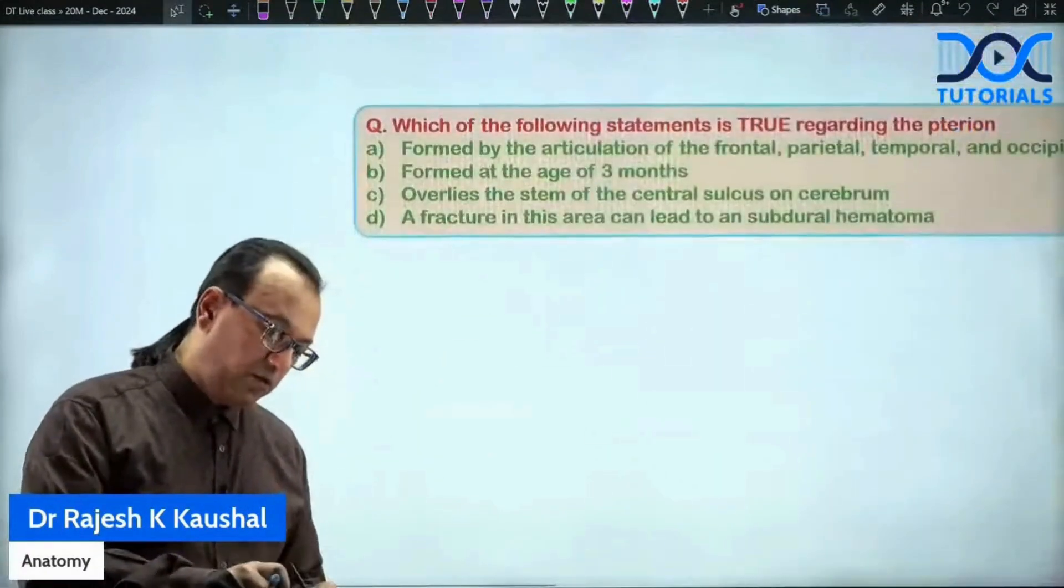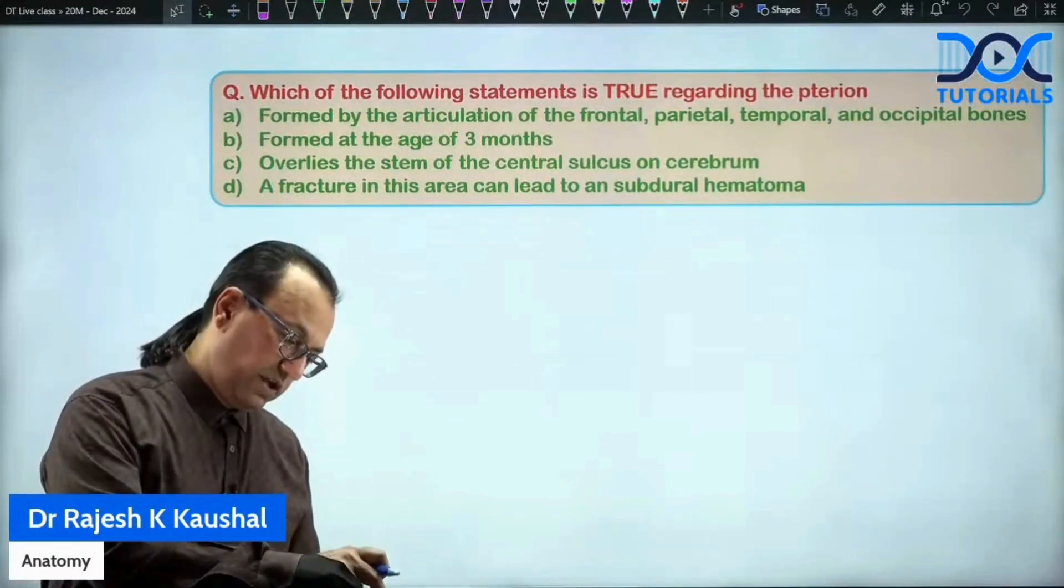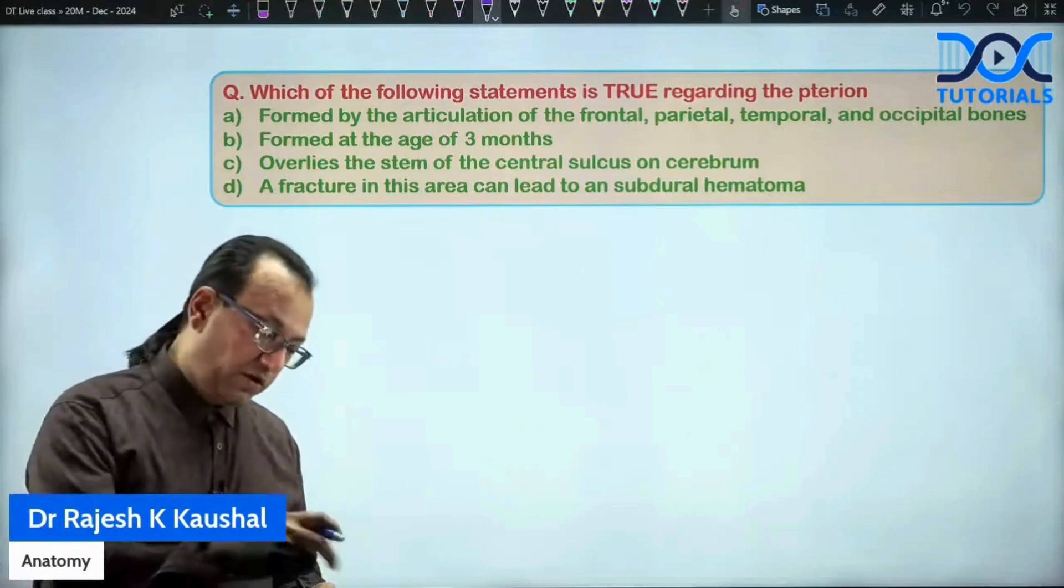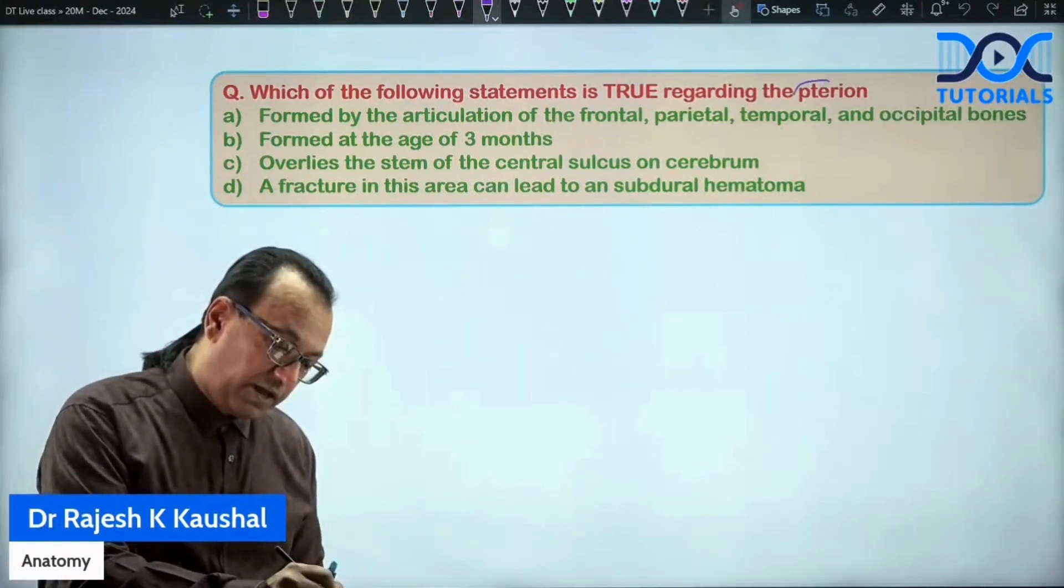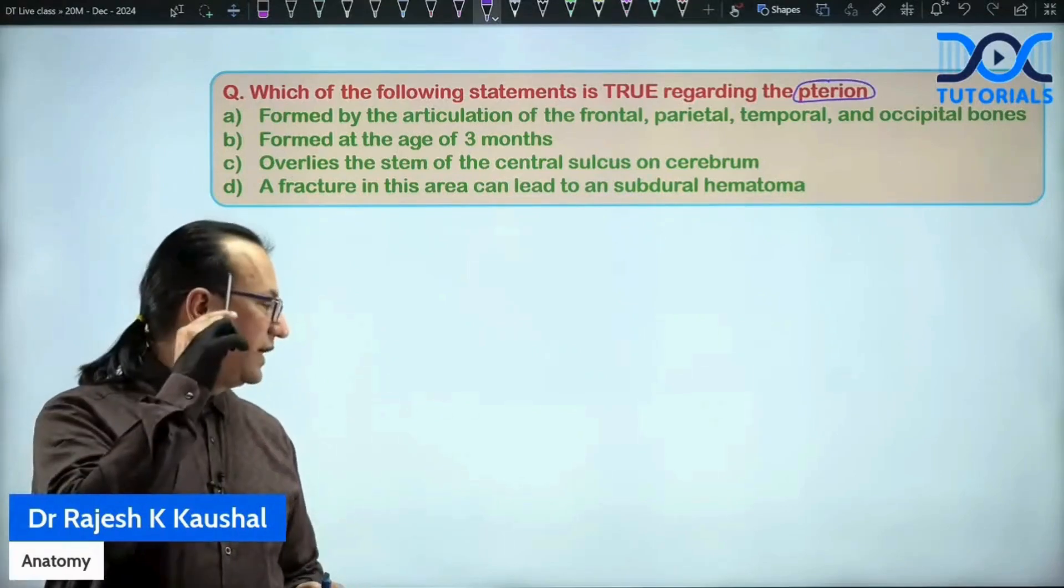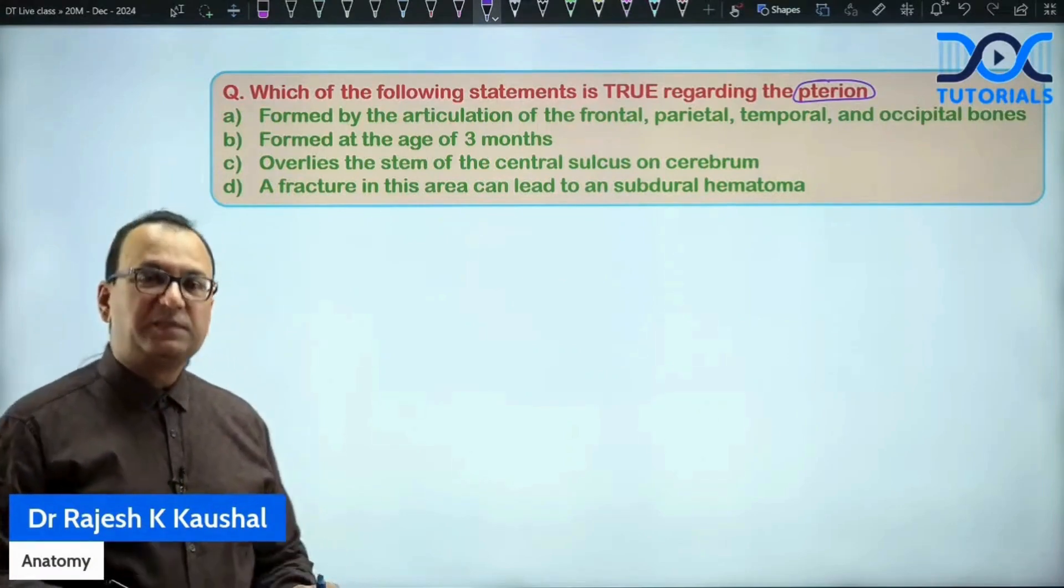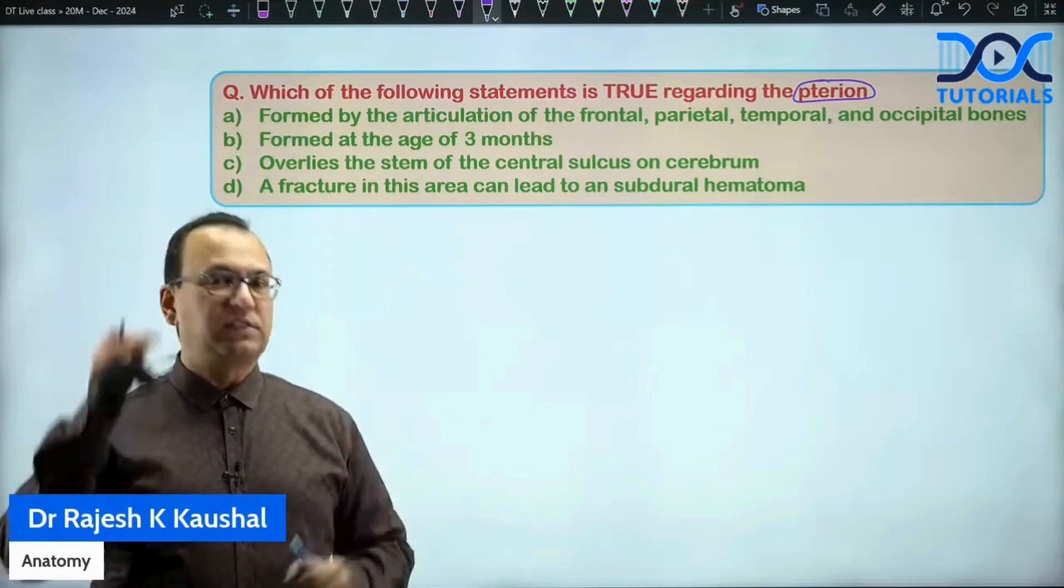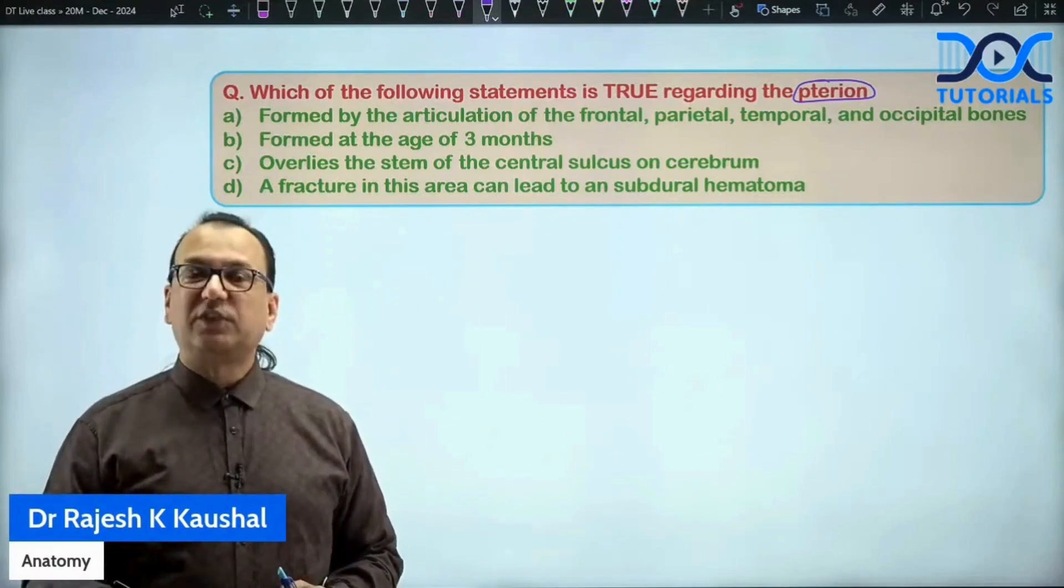You were given one question asking about the pterion and what do you think could be the answer here. So as we talk about pterion, you know a lot of questions are coming on pterion. H-shaped suture, the weakest point on the lateral aspect of the skull, one of the person riding a bike without helmet, road traffic accident, fracture here and a bleed. So that kind of questions come.